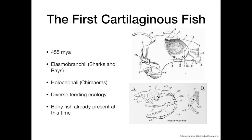The first cartilaginous fish coexisted with bony fish roughly 455 million years ago in the Paleozoic. At this time, there were already two clear subdivisions: the elasmobranchs, which were the ancestors of sharks and rays, and the holocephalins, which were the ancestors of chimeras.